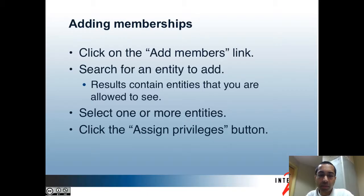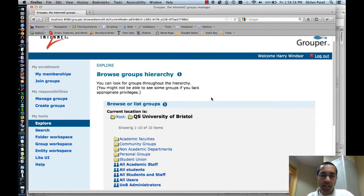Next I'll show how to add members to a group. You can click on the add members link and then search for an entity, which is usually a person or a group. Note that you won't be able to see groups that you don't have the view privilege on. Then you can select one or more of the entities and click the assign privileges button.